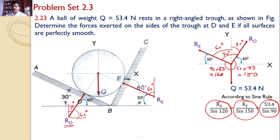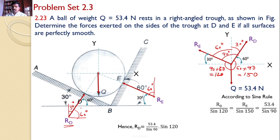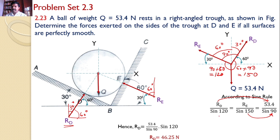Taking the equations: RD / sin120 = 53.4 / sin90, so RD = (53.4 / sin90) × sin120 = 46.25 Newtons. Similarly, RE / sin150 = 53.4 / sin90, so RE = (53.4 / sin90) × sin150 = 26.7 Newtons. These two are the reaction forces developed at points D and E.